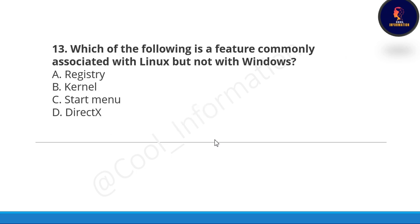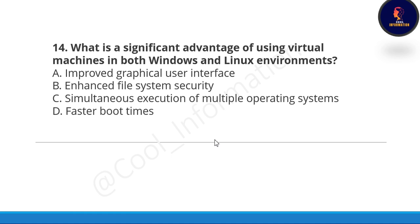Next question: Which of the following is a feature commonly associated with Linux but not with Windows? Options are: registry, kernel, Start Menu, or DirectX. The correct option is Option B, kernel.